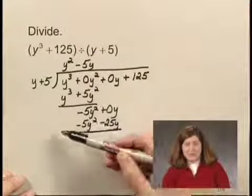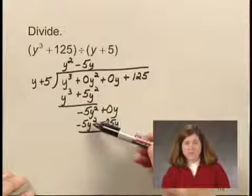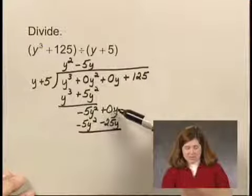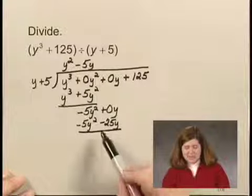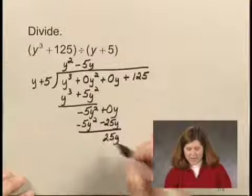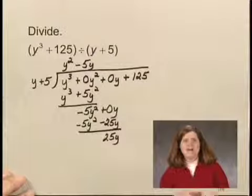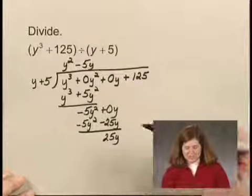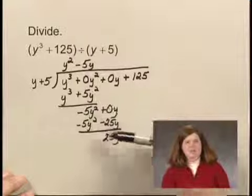Negative 5y squared minus negative 5y squared is zero. Zero y minus negative 25y is positive 25y. And don't be afraid to say that out loud or whisper it if you're in a classroom to help you keep the negative signs correct.